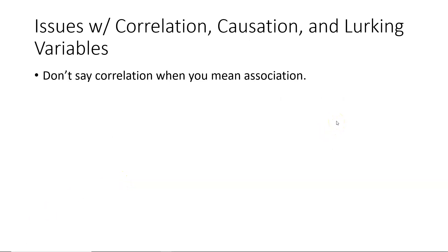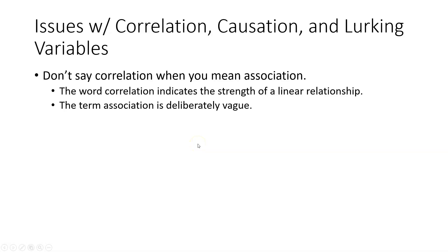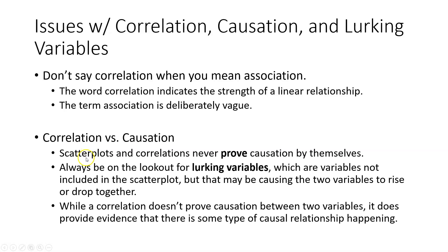As we close the presentation, let's briefly look at some issues with correlation, causation, and lurking variables. First, don't say correlation when you mean association — the word correlation indicates the strength of a linear relationship, whereas association is deliberately vague and can apply to any relationship between two variables. Regarding correlation versus causation: scatterplots and correlations never prove causation by themselves. Always be on the lookout for lurking variables — those not included in the scatterplot that may be causing two variables to rise or fall together. While a correlation doesn't prove causation, it does provide evidence that some type of causal relationship is happening.